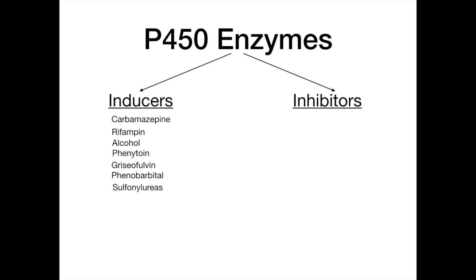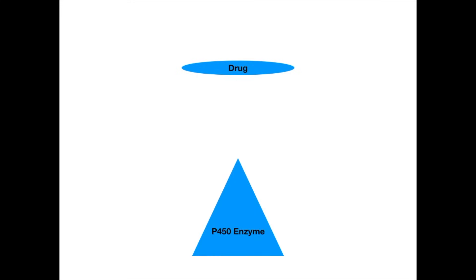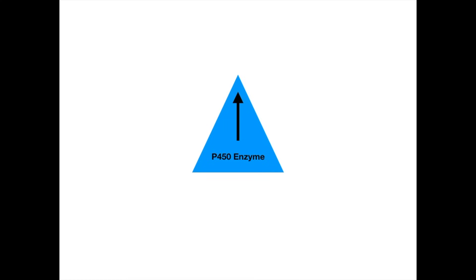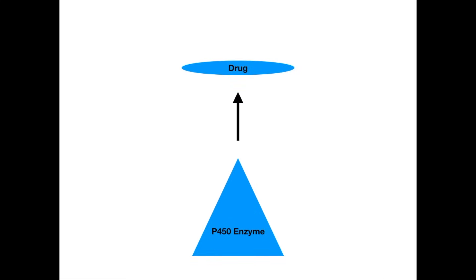So what does that actually mean? Normally, you have a drug, and over time that drug interacts with a P450 enzyme. Under normal circumstances, you take the drug and eventually it needs to be broken down. When the drug is reaching its half-life and starting to be metabolized, the P450 enzyme will work toward the drug, latch onto it, and basically destroy the drug by metabolizing it. Drugs have to be eliminated and metabolized by our body, and that's done by enzymes.